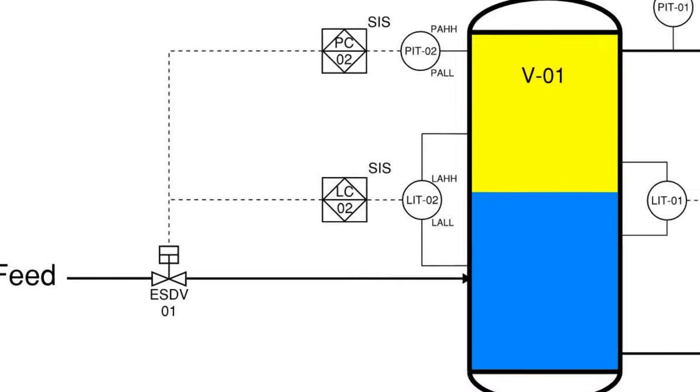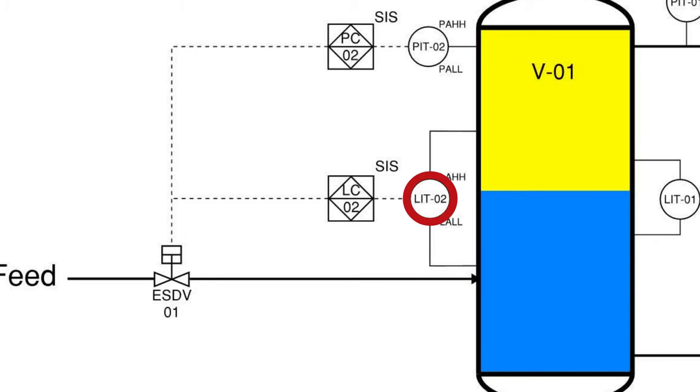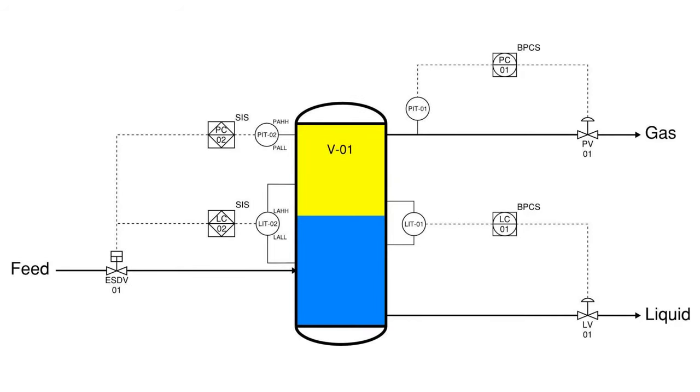Looking back at the vessel, the level transmitter LIT-2 is sensing liquid level in the vessel and transmitting a signal to the level controller LC-2, the level controlling function on the SIS. During normal operations, the BPCS will be controlling the level and there is no need for the SIS to act.